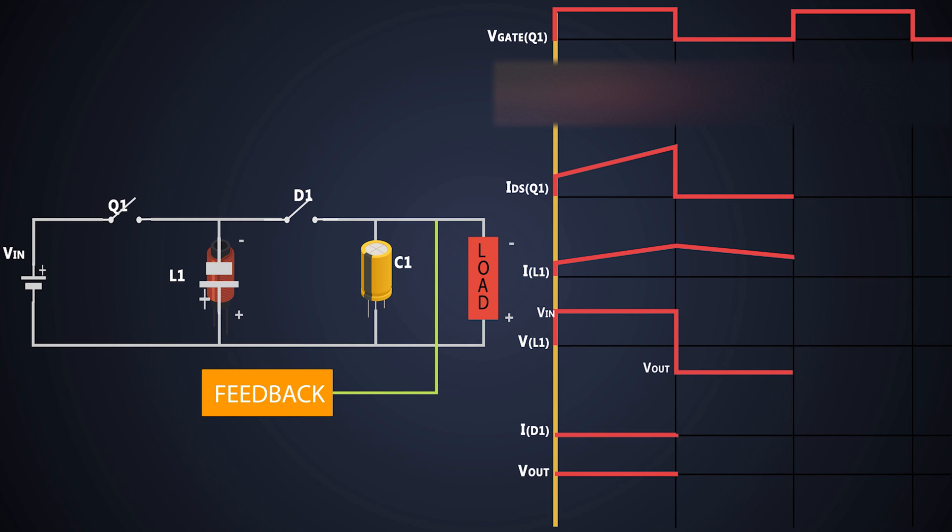Now coming back to the waveforms. Here the inductor is working as a source and its polarity has reversed. The diode is forward biased. So the value of the current flowing through the diode will be the same as that of the inductor current. Now the output voltage is constant DC which is provided by the inductor, but it is of negative value.